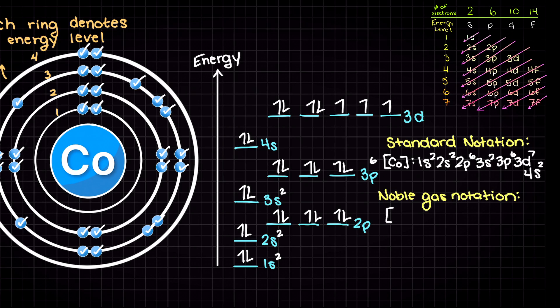In the noble gas notation, we simply shorten this section of argon's ground state electron configuration, and then write out the remaining electrons like so. We have now solved for the ground state electron configuration of cobalt in the standard and noble gas notations.